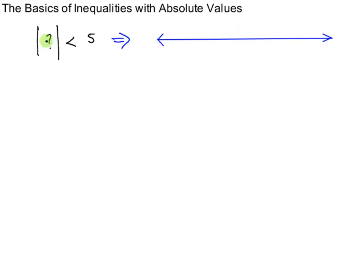Question mark could clearly be 0, for example. Question mark could be 4.9. Question mark could be negative 4.9. The absolute value of negative 4.9 is 4.9, and 4.9 is less than 5. So question mark could be negative 4.9 or positive 4.9.